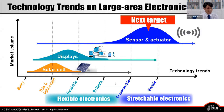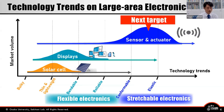Solar cells and displays, which were once bulky, have become thinner and lighter for convenience, and larger with higher resolution have made them easier to watch. Today, they are also evolving to become bendable and rollable. Sensors and actuators are similarly becoming thinner, lighter, and more flexible, but also more conformable, elastic, and stretchable — expected to play a major role in next-generation IT systems. Thus, large-area electronics are rapidly becoming more flexible and stretchable.